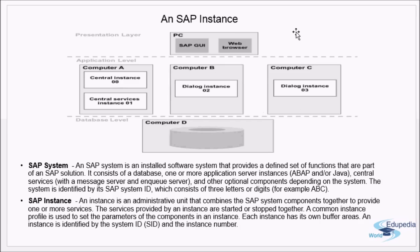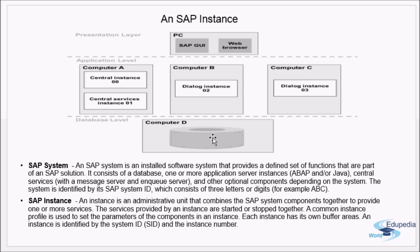From the client side, through either an SAP GUI or a web browser, this is the SAP system. It will have a central service and a central instance, and then additional dialogue instances. At the bottom is the database level. So here we can have a second instance and a third instance, and so on.